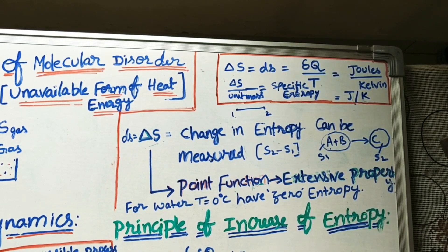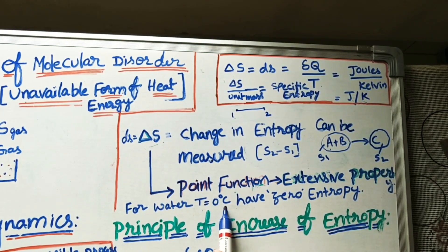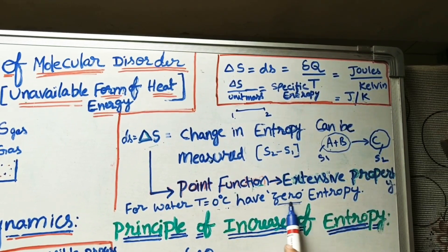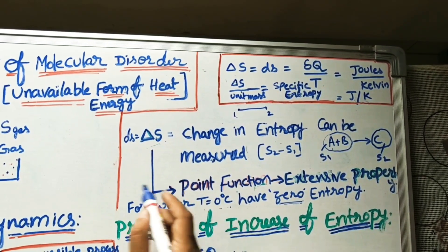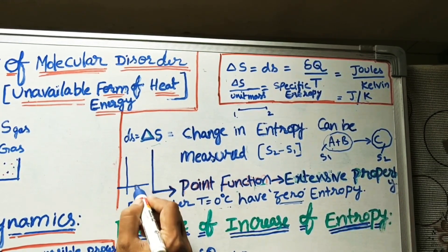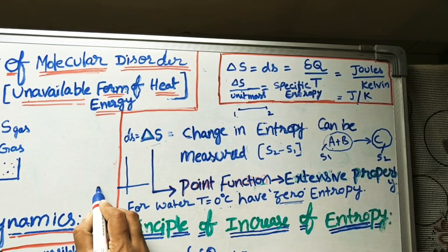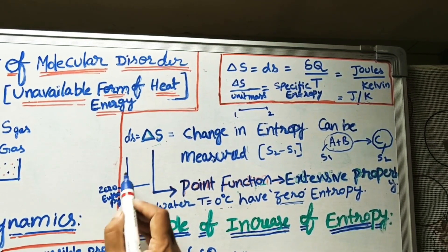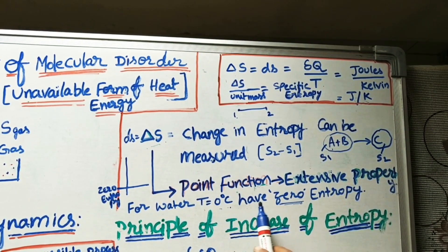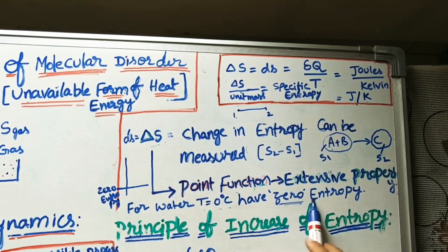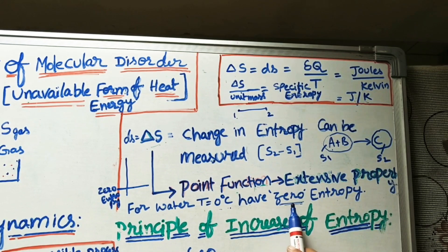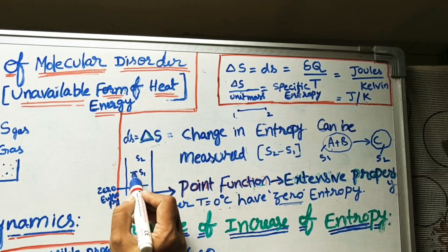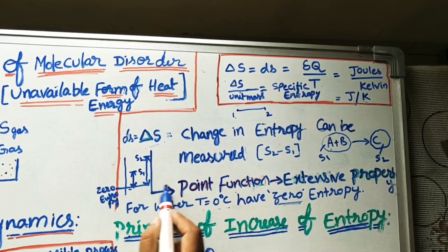At T = 0°C, or absolute zero temperature, entropy is also zero. This zero entropy is taken as a reference point or reference line in graphs, similar to a zero baseline for measuring heights. From this reference line we measure absolute values S1, S2, S3 and so on.